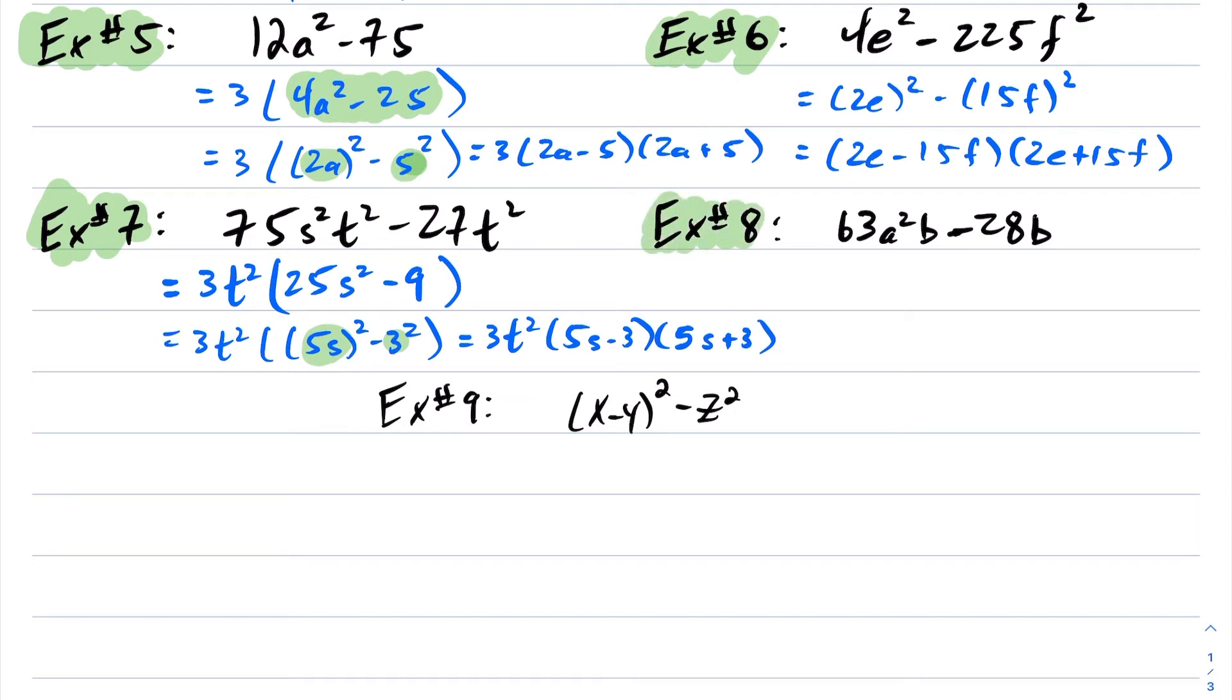Okay, let's look at example 8. Same idea here. I'm looking for a GCF on this. And I can factor out a 7 out of here and a 7b actually. So if I factor out a 7b, 63 divided by 7 is 9. a² is unchanged and that b is now taken out. Negative 28 divided by 7 is negative 4 and the b is gone.